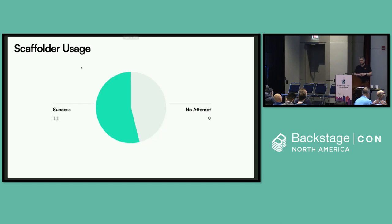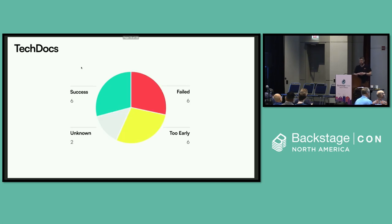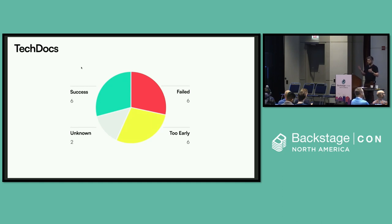The scaffolder was broadly successful across the whole cohort. Out of 20 companies, nine hadn't tried to use it for various reasons, but everybody who did try had reported success. Not a single company tried the scaffolder and failed to get any value out of it. TechDocs was more of a mixed bag: six companies reported success, six reported trying and failing to drive significant adoption, six hadn't really tried yet, and two I forgot to ask about.